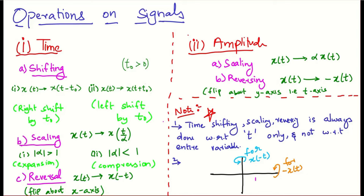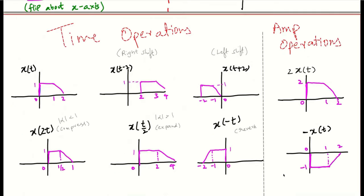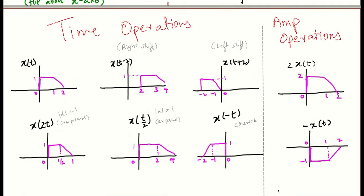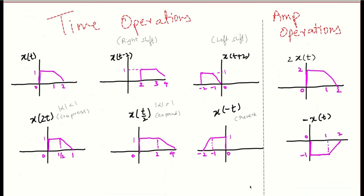The second note: when you perform time reversal, you need to flip the signal about the amplitude axis. And when you are performing amplitude reversal, you need to flip the signal about the time axis. So let's understand all these operations using a few examples.